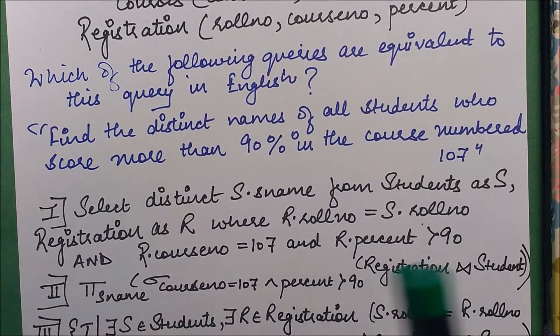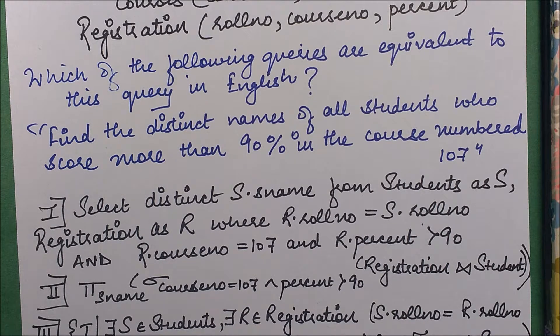The query is: find the distinct names of all students who score more than 90% in the course numbered as 107. So let's now check the options. What you have to do is check which are the correct ones and mark wrong the wrong ones, so finally you choose the correct option from the options below.